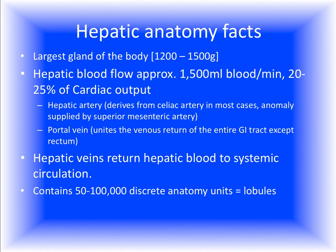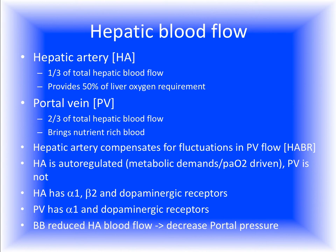The liver is organized in lobules — about 50,000 to 100,000 discrete anatomic units called lobules. Coming back to hepatic blood flow: the hepatic artery provides around one third of total hepatic blood flow but brings more than 50% of the oxygen to the liver. The portal vein brings approximately two thirds of hepatic blood flow, bringing less oxygen but bringing the nutrients. The hepatic artery is auto-regulated by metabolic and vascular mechanisms and compensates for fluctuations in portal vein blood flow — this is called the hepatic artery buffer response.